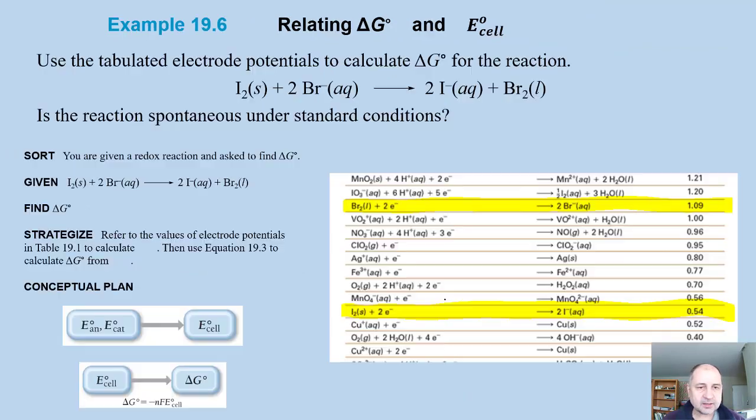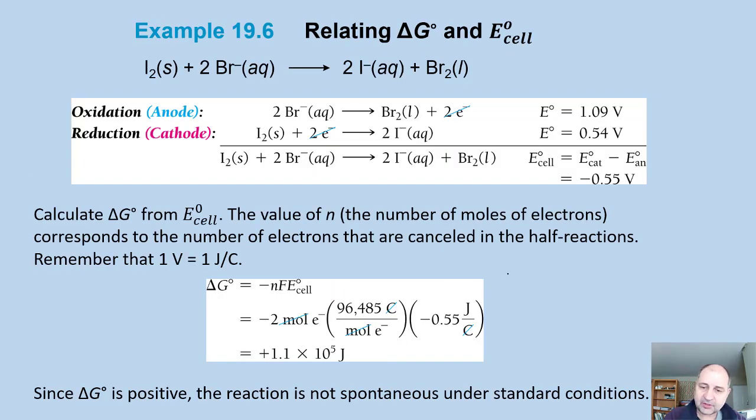Let's look at a clean slide here. So here's that calculation, we have 2 moles of electrons, so the moles cancels, the electron cancels, the coulomb cancels here. We end up with a rather large number, and it is positive, so therefore it is non-spontaneous.